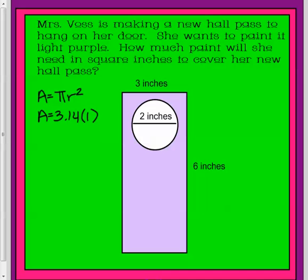We're going to plug in our radius, which is 1, because we cut that in half. So our area of the circle is literally 3.14 inches squared.